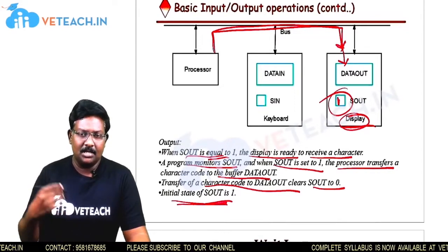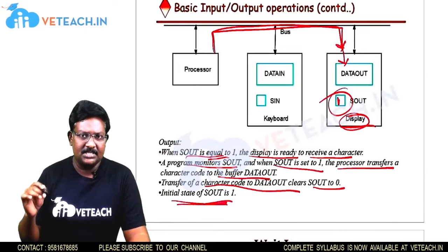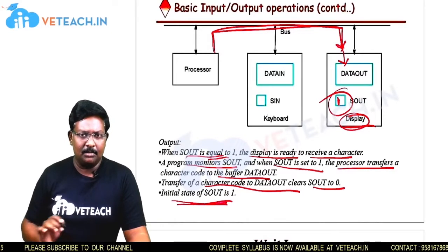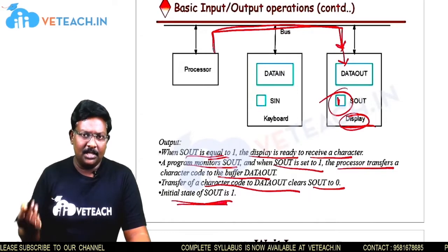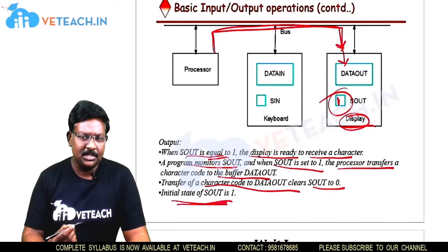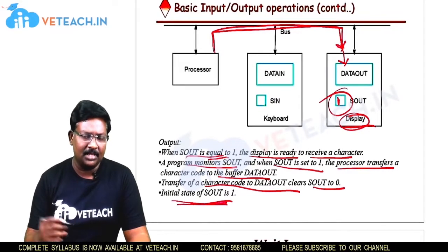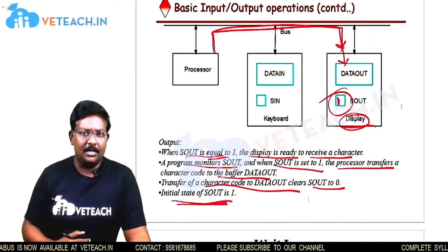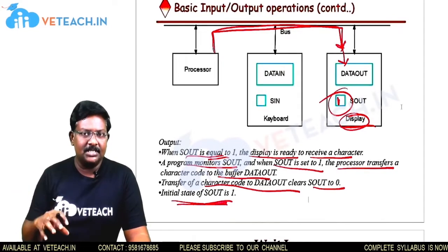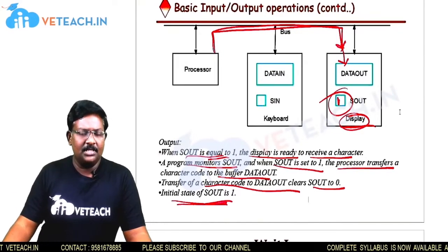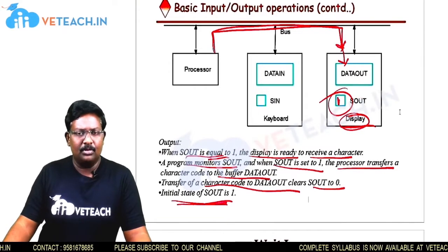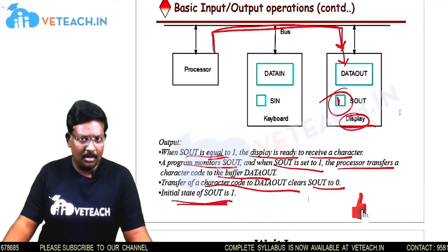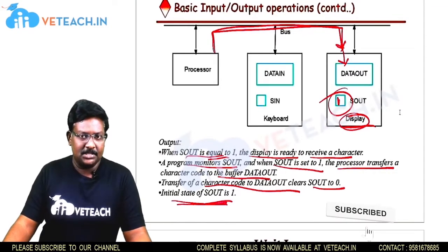This is what happens in the basic output operation. The processor checks the SOUT flag condition, and only if it is 1 does it perform the data transfer operation; otherwise it performs other operations. In basic input/output operation, depending upon the flag bits, the processor performs operations without waiting — it checks the flags and only then proceeds. One disadvantage of this type of I/O operation is that the processor must continuously check the flag bits.